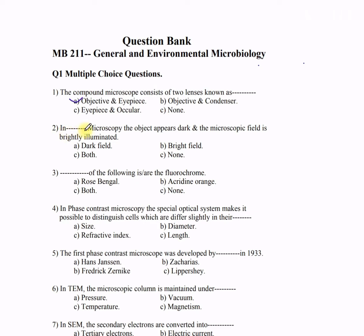The compound microscope has two lens systems: the objective, where the specimen is placed on the stage, and the eyepiece, also called the ocular, through which the image is observed. Question 2: In dash microscopy, the object appears dark and the microscopic field is brightly illuminated. Options: A) dark field, B) bright field, C) both, D) none. The correct answer is option B — bright field. In bright field microscopy, a dark image is produced against a bright background. If the object is stained, a colored image is seen; otherwise a dark, refractive image is observed.